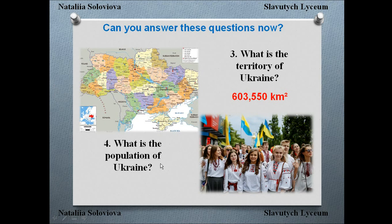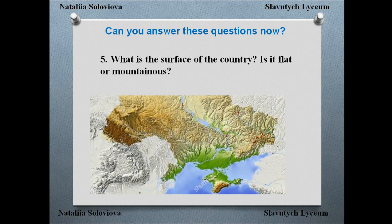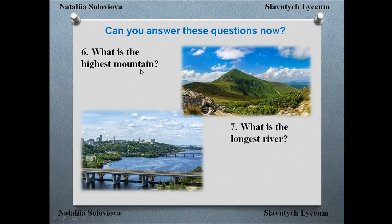What is the population of Ukraine? We don't know exactly, but the population of Ukraine is about 44 million people. What is the surface of the country — meaning the relief? Is it flat or mountainous? Looking at the map, mountains are only in Crimea and in the Carpathians. The text says only 5% of Ukraine's territory is covered with mountains, so the surface is mostly flat. The highest mountain is Hoverla — it is 2,061 meters high.